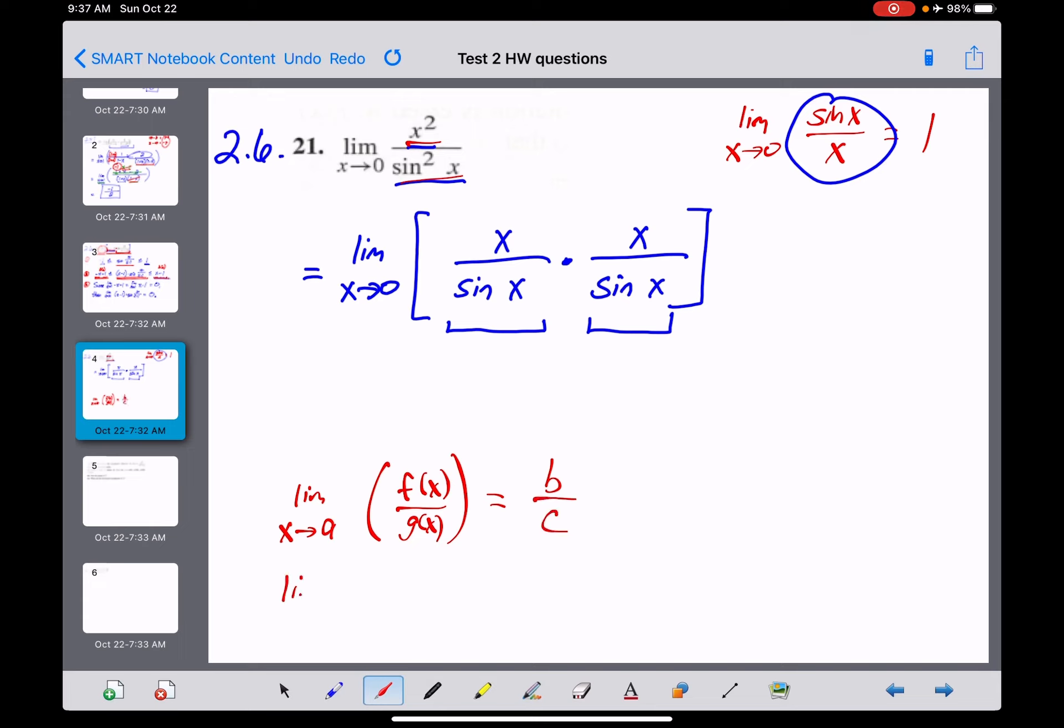It would make sense then, I hope, that we could take the limit as x approaches a of the reciprocal of this function, g of x over f of x, and we would simply get the reciprocal of the original answer, which in this case would be c over b.